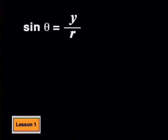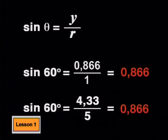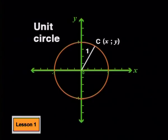For example, sin of 60 degrees for a line segment of one unit is 0.866 divided by one. That's the same as sin of 60 degrees for a line segment of five units. This means we can choose to use one unit for the radius of a circle with its center at the origin. The circle created by using a radius of one unit is called a unit circle.